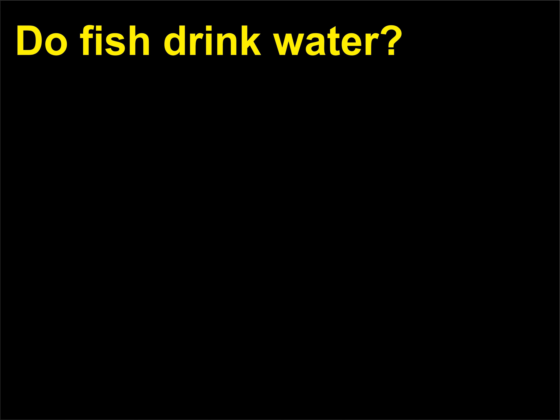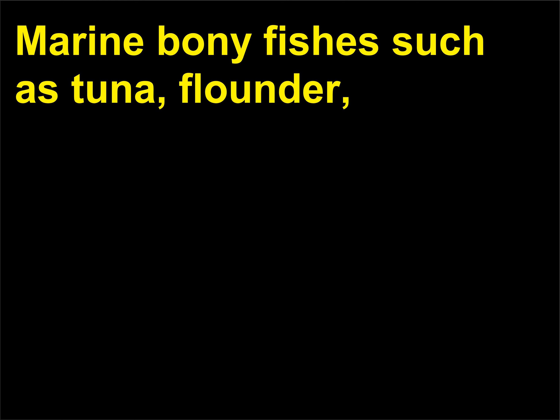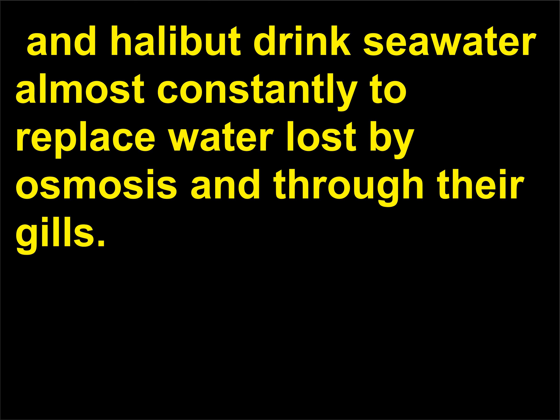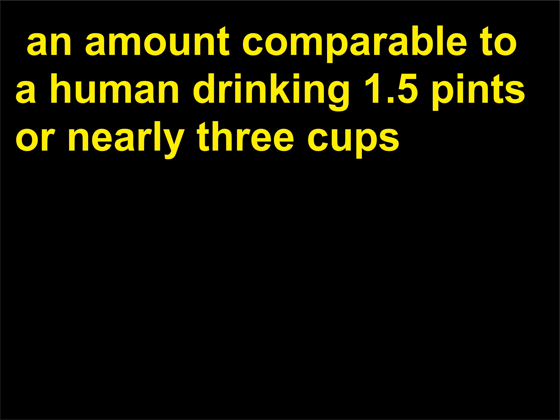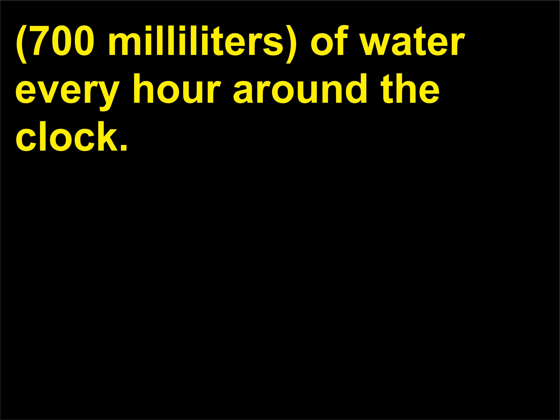Do fish drink water? Marine bony fishes such as tuna, flounder, and halibut drink sea water almost constantly to replace water lost by osmosis and through their gills. It is estimated that they drink an amount equal to 1% of their body weight each hour — an amount comparable to a human drinking 1.5 pints or nearly 3 cups (700 milliliters) of water every hour around the clock.